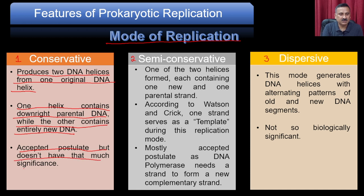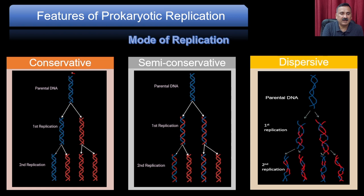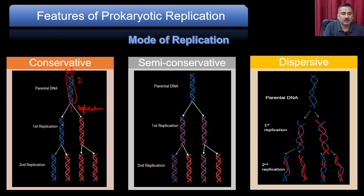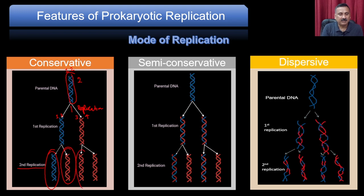In conservative mode, from a parental DNA with strands 1 and 2, replication generates four strands. Strands 1 and 2 remain in the parent cell, while newly synthesized strands 3 and 4 go to the daughter. There is no mixing of parental and new DNA content. This is an accepted postulate, but does not have much biological significance.